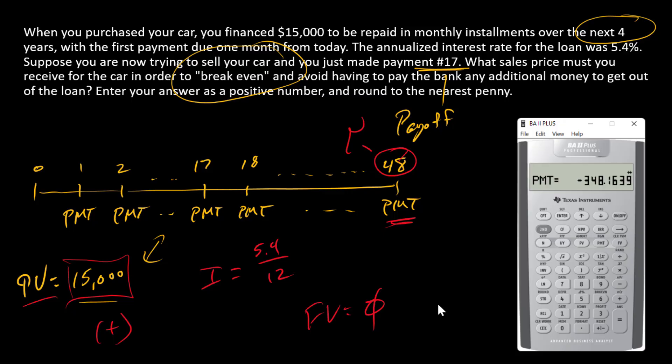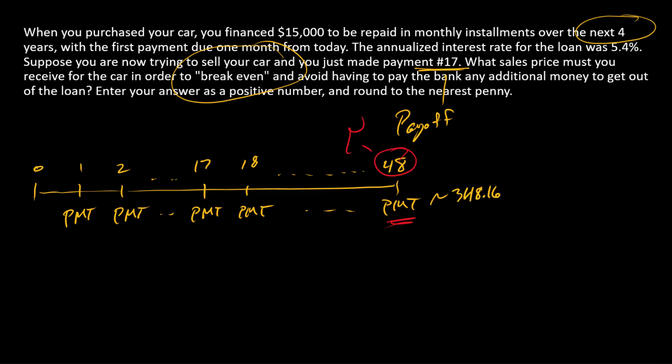The monthly payment is $348.16. Now we need the payoff as soon as payment 17 is made.